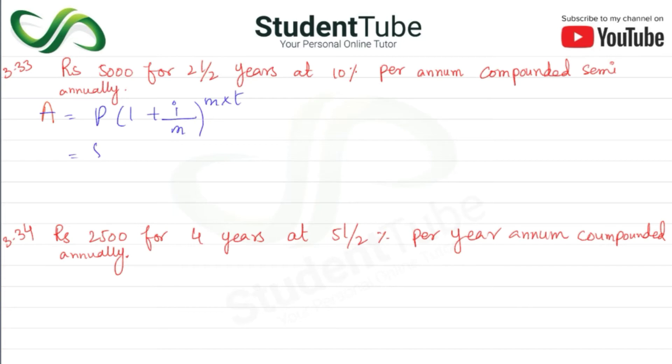P is 5000, 1 plus i which is 0.1, m is semi-annually which is 2, and multiplied by years which is 2.5. So 5000, 1 plus 0.1 divided by 2 equals 0.05, and when we multiply these two we get 5.